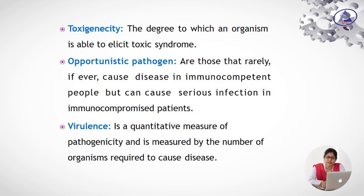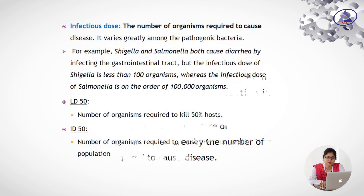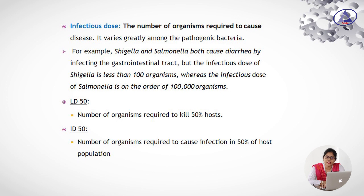What is virulence? It is a quantitative measure of pathogenicity and is measured by the number of organisms required to cause disease. What is infectious dose? The number of organisms required to cause disease — it varies greatly among pathogenic bacteria. For example, Shigella and Salmonella both cause diarrhoea by infecting the gastrointestinal tract, but the infectious dose of Shigella is less than 100, whereas the infectious dose of Salmonella is approximately 1 lakh.